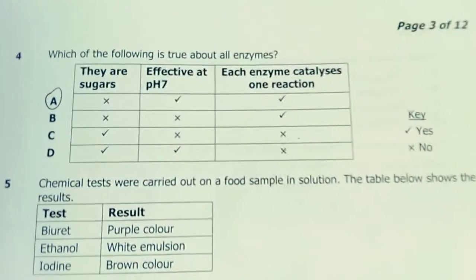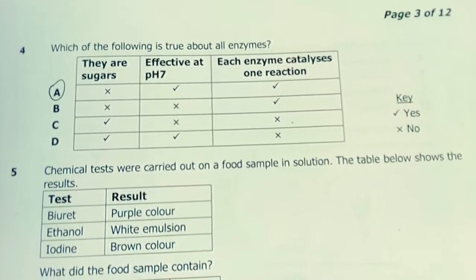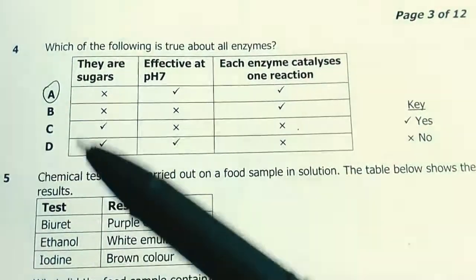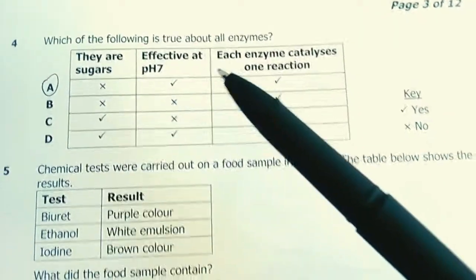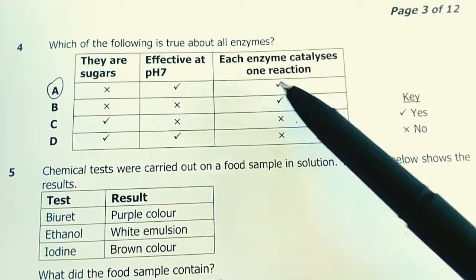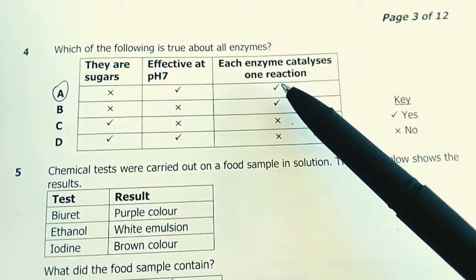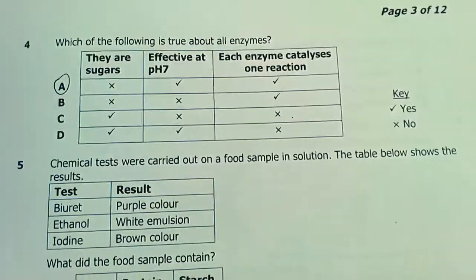Number 4. Which of the following is true about enzymes? They're sugars? No, they're protein in nature. They're affected by pH. They are specific, therefore each enzyme catalyzes one reaction. This is the property of being specific. Our answer is A.